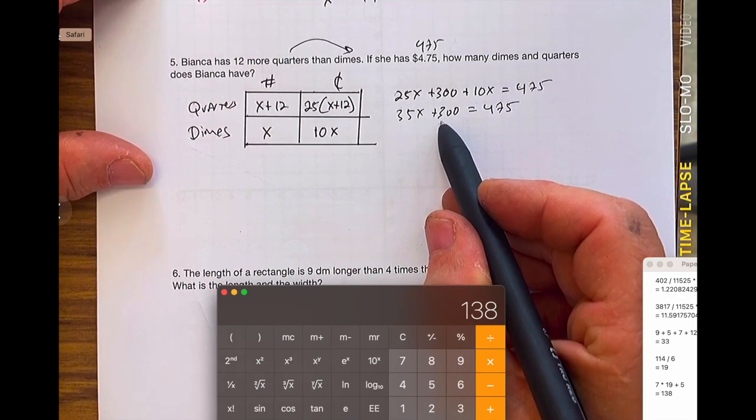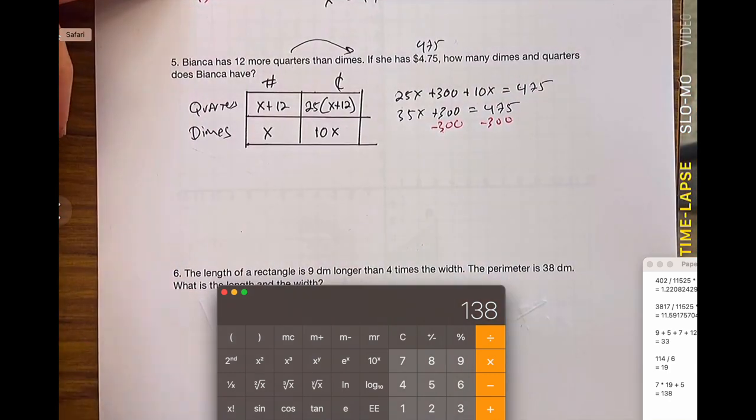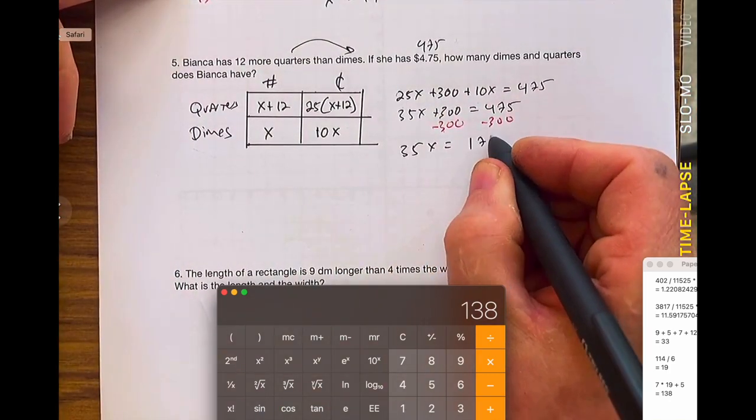I want to get rid of the 300. I'm going to subtract 300 from both sides. That's minus 300. 35X is equal to 175.